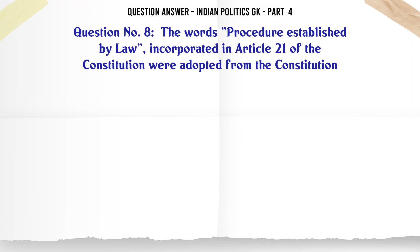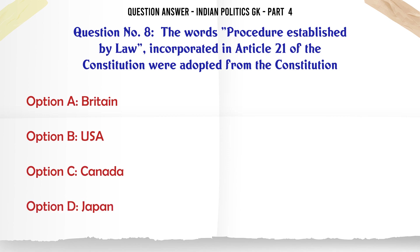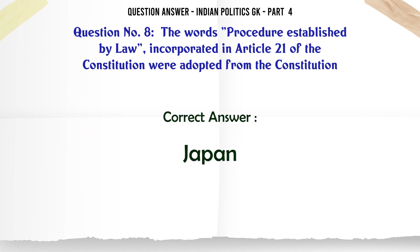The words 'Procedure established by law' incorporated in Article 21 of the Constitution were adopted from the Constitution of which country? A. Britain. B. USA. C. Canada. D. Japan. The correct answer is Japan.